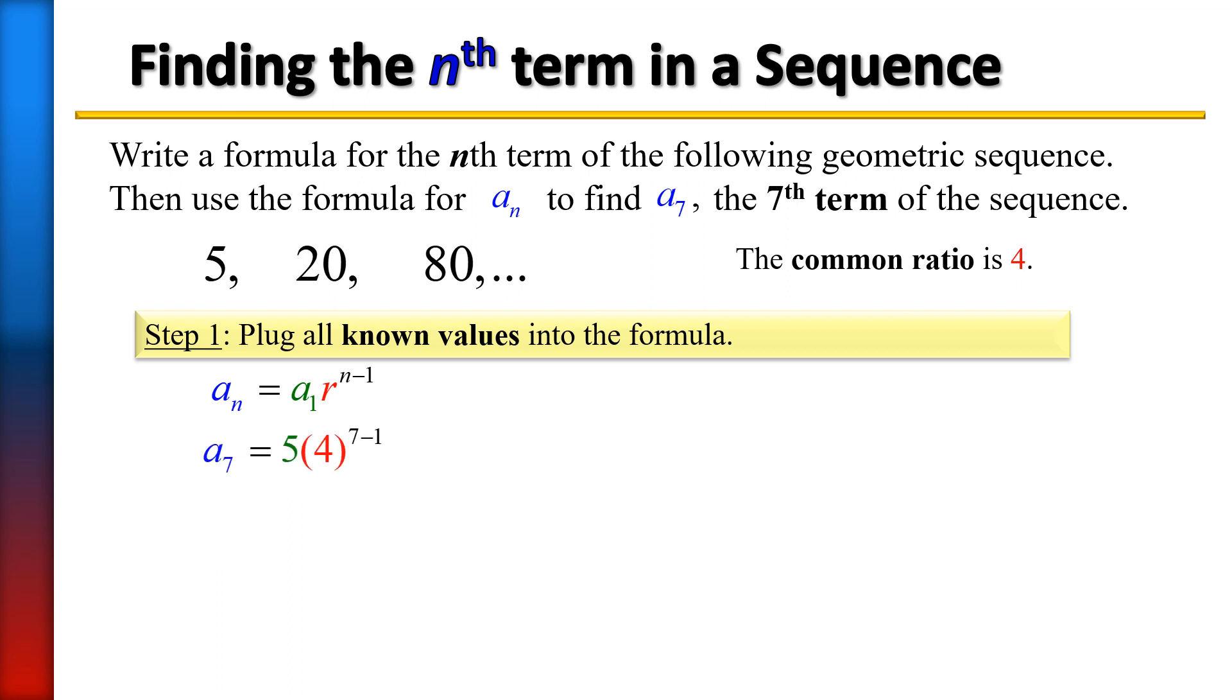We're going to start using the order of operations, which means you should do the exponents first. So that's going to be raised to the sixth power, and you can do that on your calculator. 4 raised to the sixth power is going to give you a large number, I believe that's 4096.